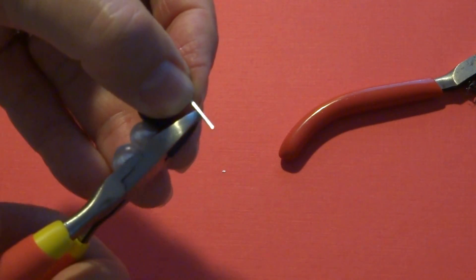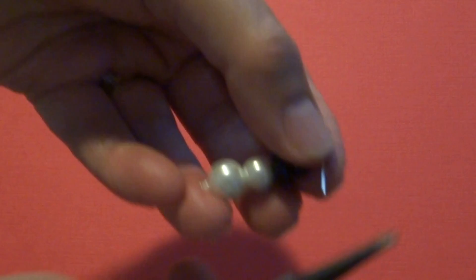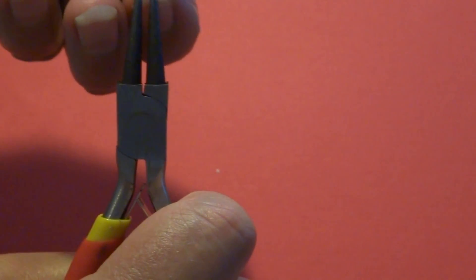So I cut it down to where I leave about a half an inch. I'm just cutting that over my tray. And then I take my round nose pliers and I'm just going to twist this up.